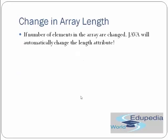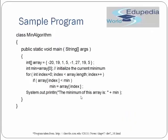How to change the array length: if the number of elements in an array changes, Java will automatically update the length attribute. A sample program takes an int array with some values, stores array[0] as the minimum, then loops from index 0 to length-1 — using less-than-length because the last valid index is length-1 — and checks if array[i] < min to find the minimum element.